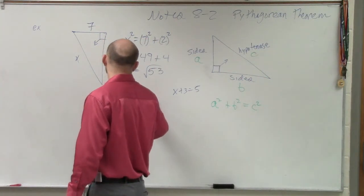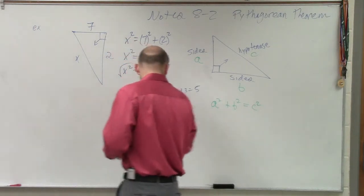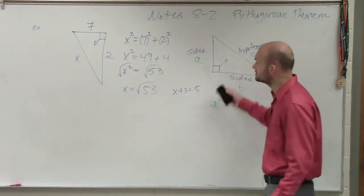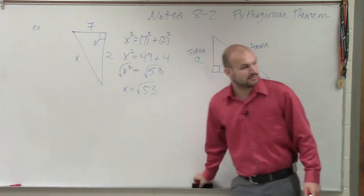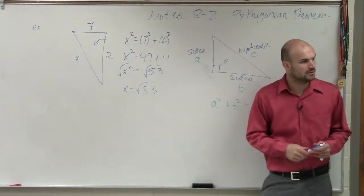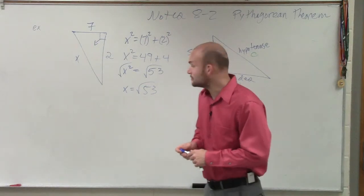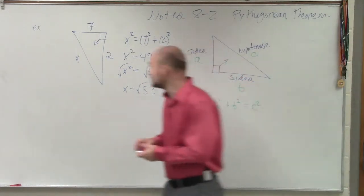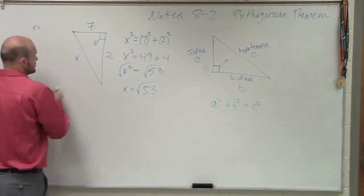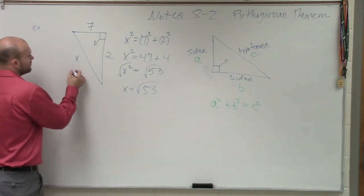So you take the square root, x equals the square root of 53. As far as I am concerned, that is the simplified. Oh, I'm not going to erase it. I was just saying that's going to be the simplified version of my answer. So therefore, the length of my hypotenuse is going to be the square root of 53.